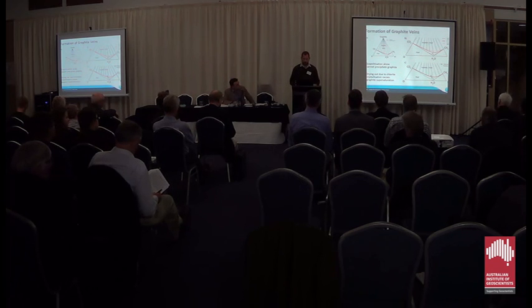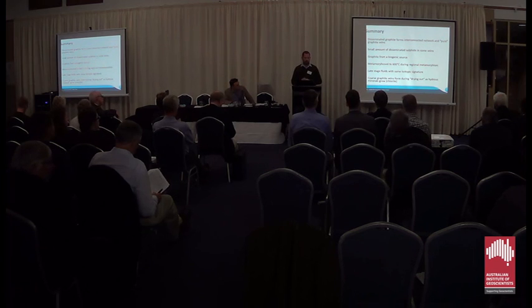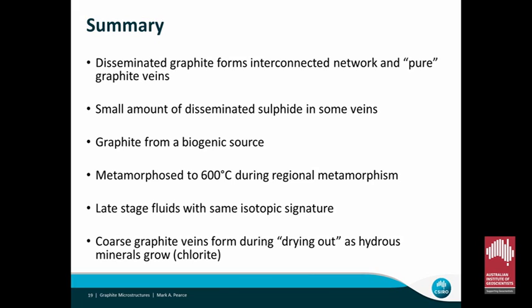In summary: the bulk of the deposit shows disseminated graphite forming an interconnected network, and the veins help us understand the deposit's history and contain slightly purer graphite. There is a small amount of disseminated sulfide in the veins, though sulfide is generally rare throughout the rock. The graphite appears to be from a biogenic source based on carbon isotopes, metamorphosed to lower amphibolite facies during regional metamorphism, and subsequently affected by late fluids which crystallized additional graphite as water was removed by co-precipitating minerals. Thank you.